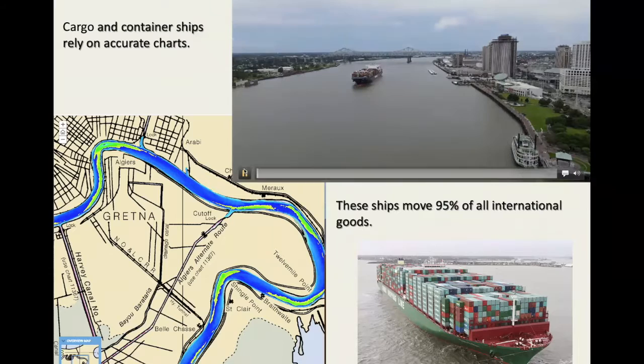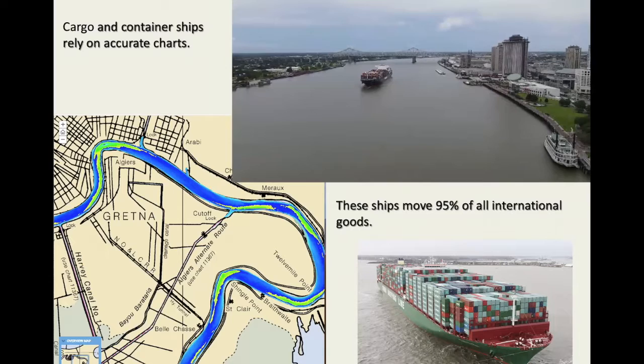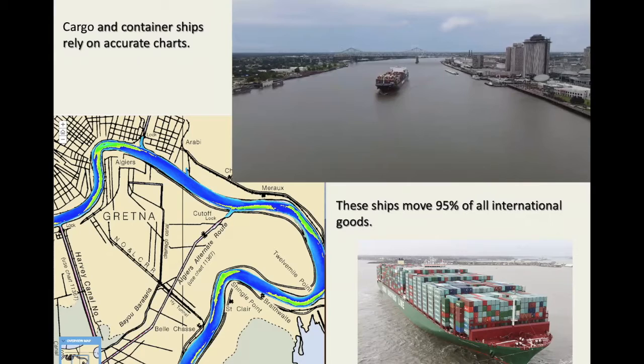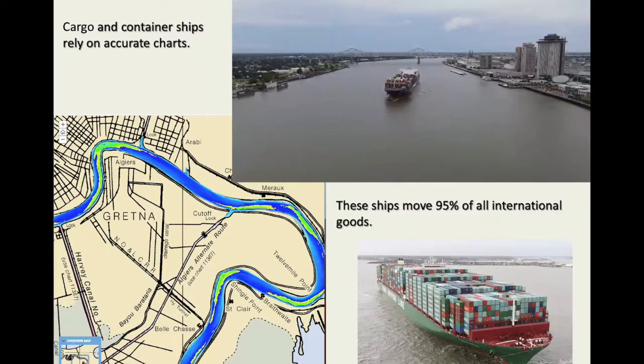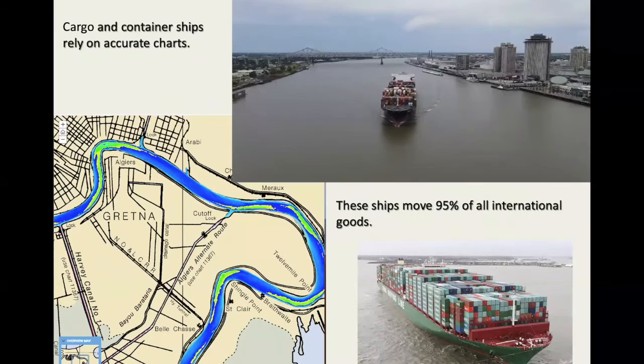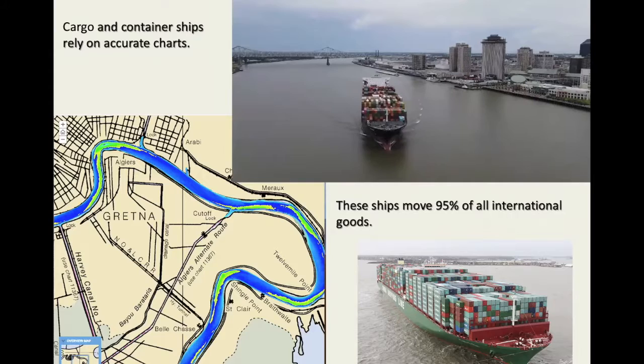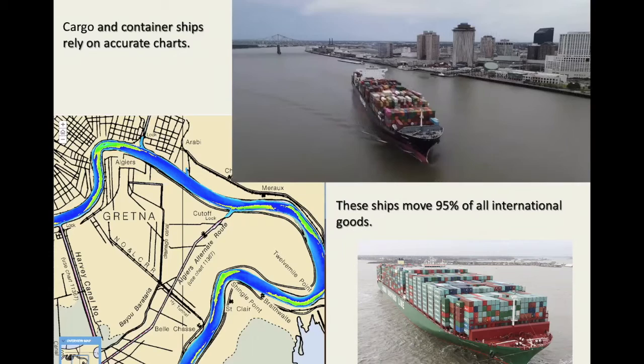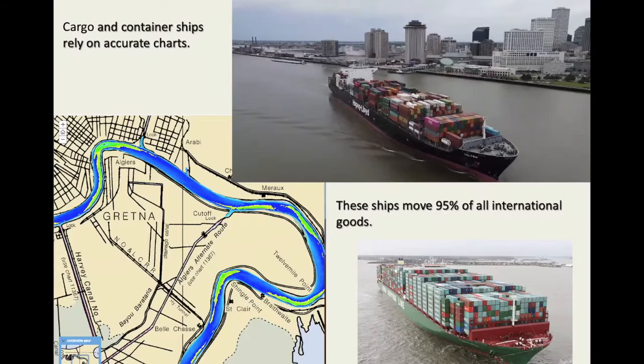Here is an example of hydrographic surveying in a very important river — in this case, the Mississippi River. Here is a video of a container ship coming down the Mississippi River. The chart to the bottom left shows an overlay of recent bathymetric surveying by hydrographers showing the deep areas, for example around the bend by Algiers. These ships are really important for world commerce: ninety percent of all international goods are transported on ships.